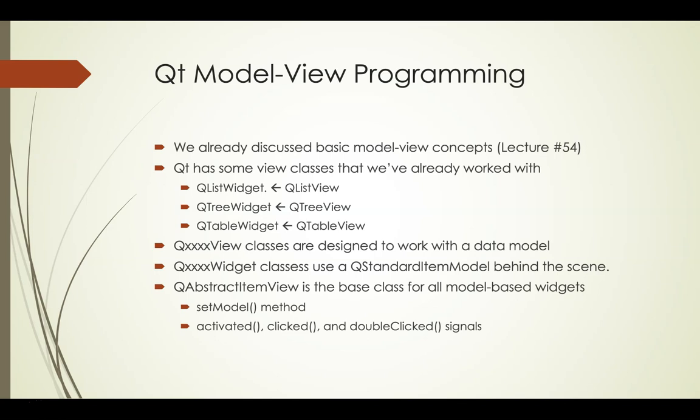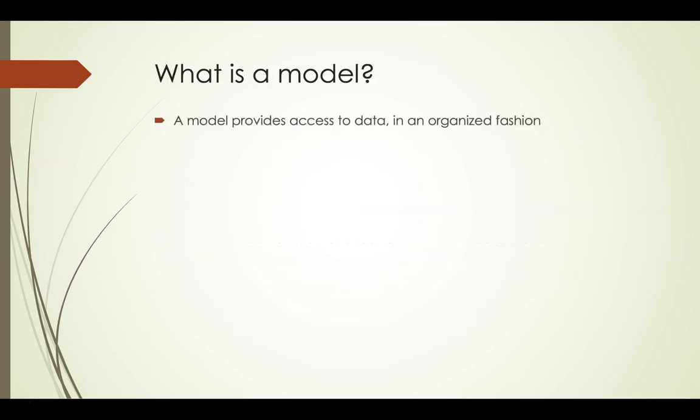But what do we mean when we talk about a data model? What are they? Where do they come from? And how can we get one? A model provides access to data in an organized fashion. In the Qt framework, a data model can be thought of as a grid. Each model item has a row, a column, and a parent.